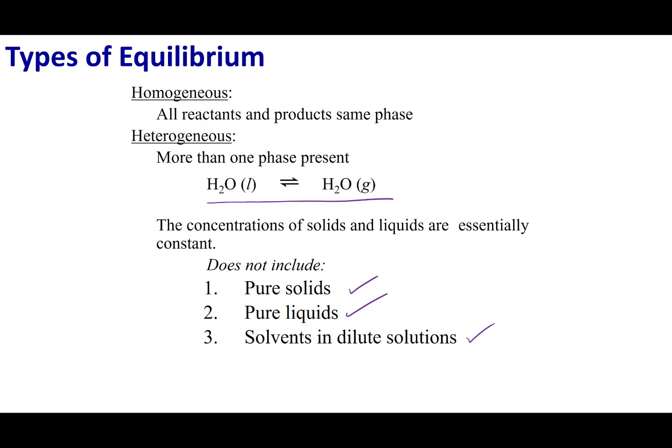So if I were to write the Kp expression on here, the Kp is going to be my products. So that's going to be the pressure of H2O over my reactants. And since it's a liquid, I'm just going to put it over one. So my Kp for this equilibrium is just the pressure of H2O.